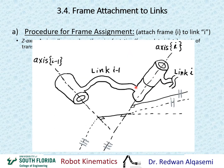Once we put the motion axis line, we can choose either direction to assign the arrowhead for that particular axis. Just a little tip: it's always a good idea to make these arrowheads in the same direction as much as possible if the axes are parallel between the Z axes, otherwise we will create a twist angle unnecessarily.